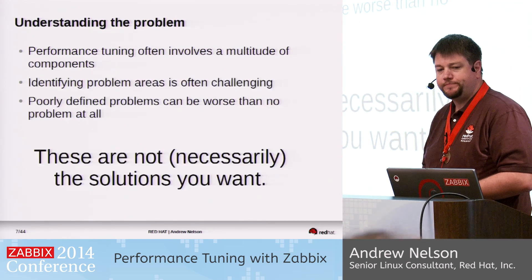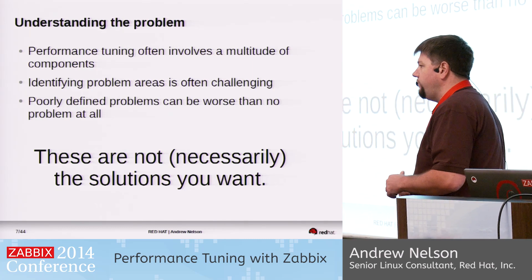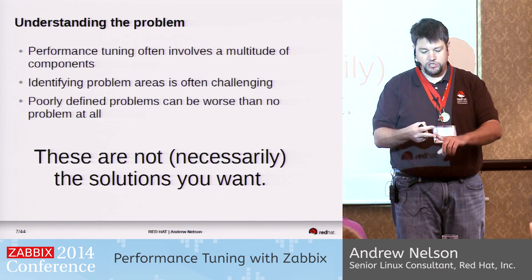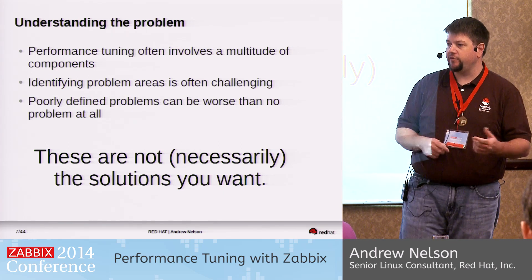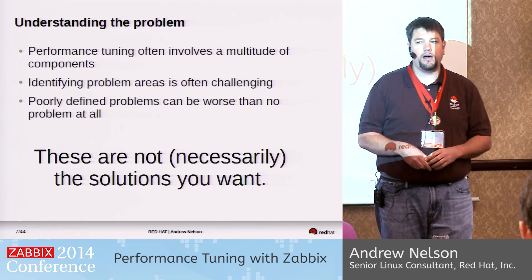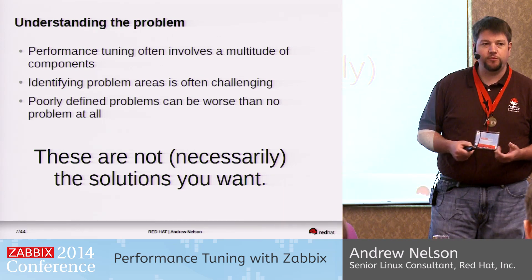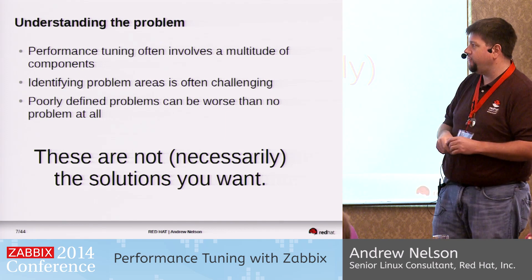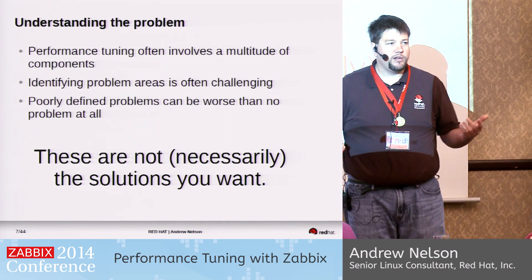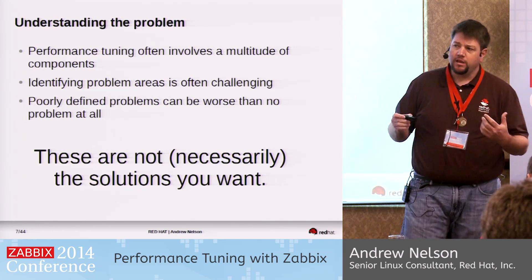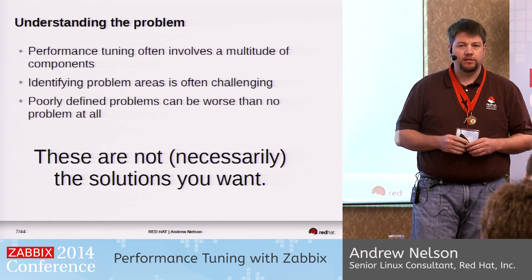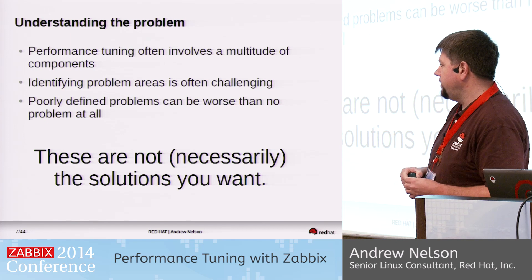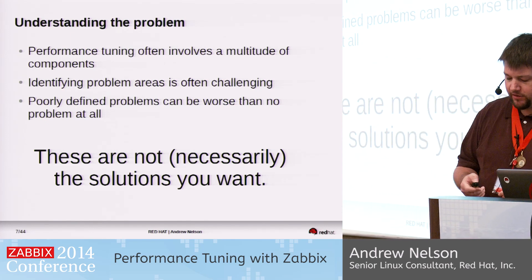Performance tuning involves a multitude of components. How many times have you tried to do performance tuning on an application that spanned network, storage, physical hardware, and it's running on a virtual machine? Each one of those pieces has its own performance tuning, so you sometimes have to take a holistic and both a macro and micro focus at the same time. Identifying your problem can be very challenging, and if you don't define your problem very clearly, what's the point in tuning?